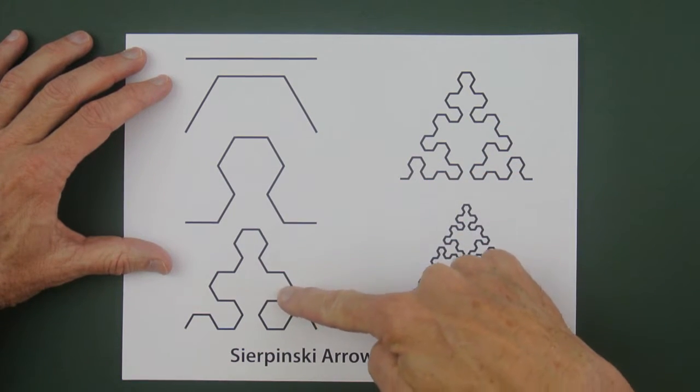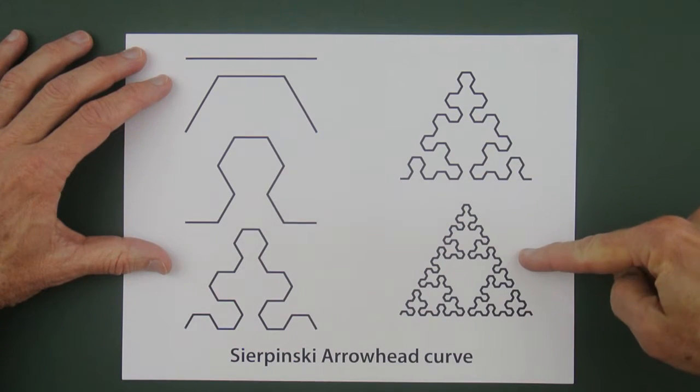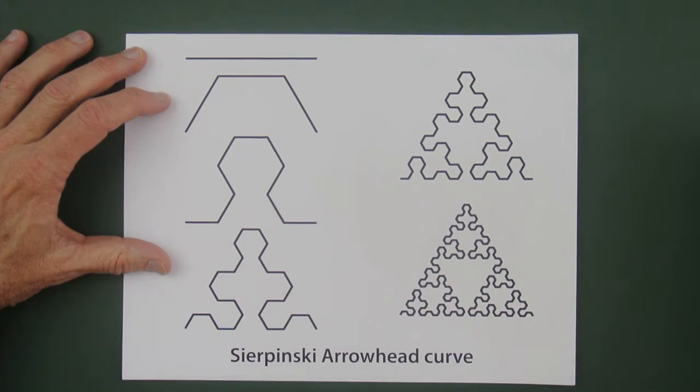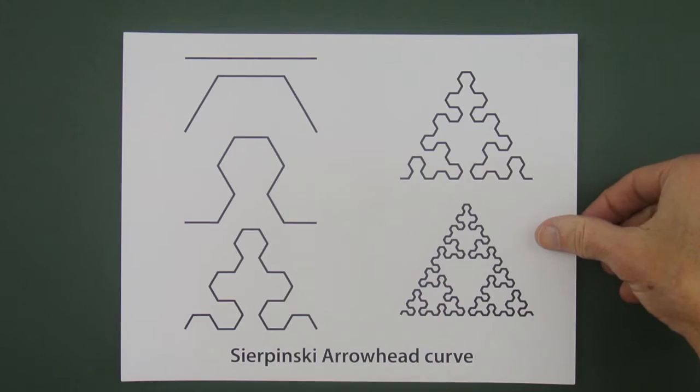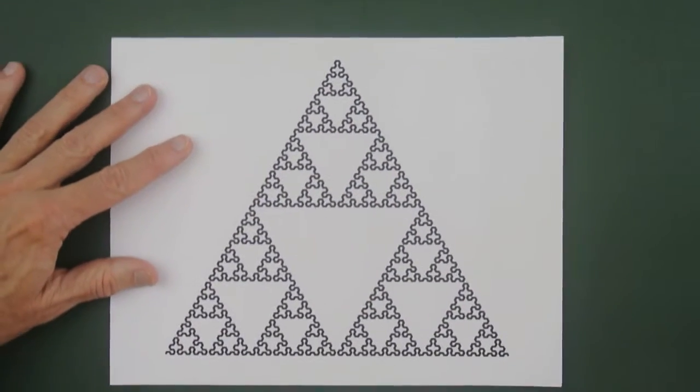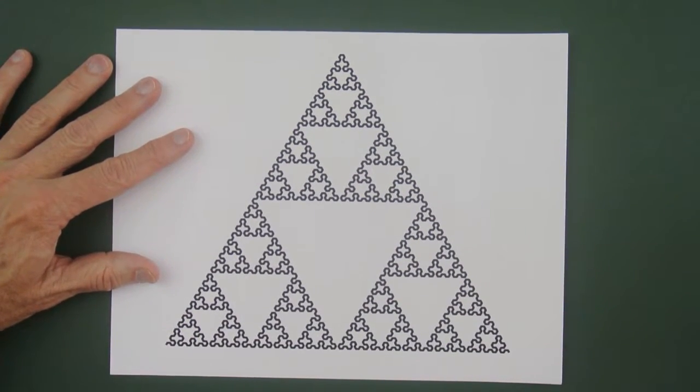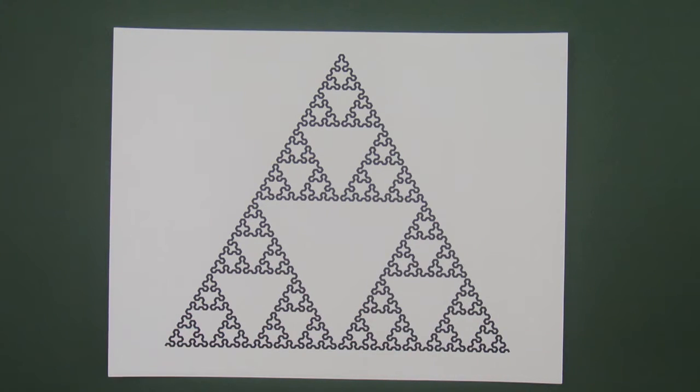And as we iterate, it looks more and more like the Sierpinski triangle. And after two more iterations after this, you can very much see the Sierpinski triangle character. I think this is a clever and very beautiful curve.